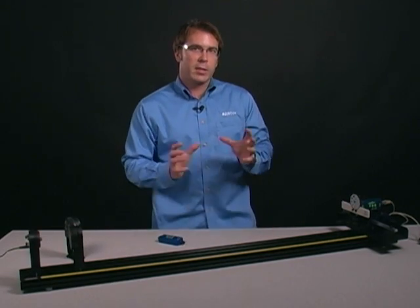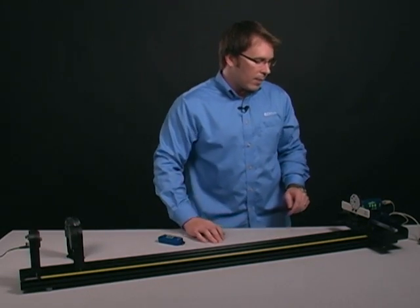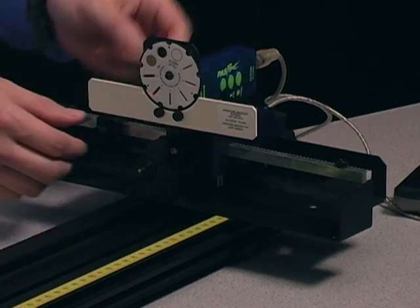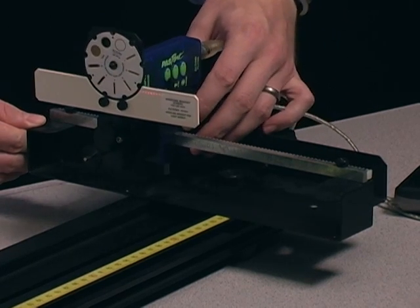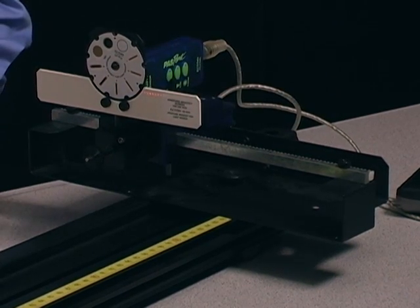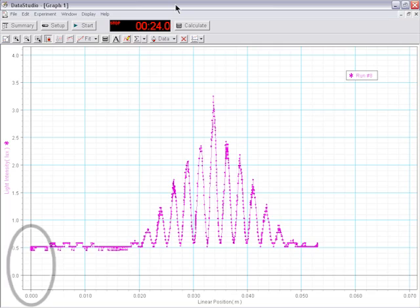And finally, for best consistency results, I have a stop on my linear translator that allows me to move my rotary motion sensor to the same point each time. This allows the rotary motion sensor to start at zero centimeters whenever I begin every data collection run.